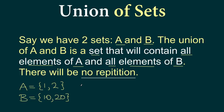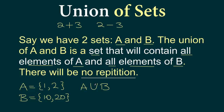Now for A union B, let's first find out what symbol we should use. Just as we use a plus symbol to add real numbers or a minus symbol to subtract them, for union we use this symbol — it is shaped like the letter U, U for union.